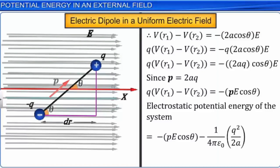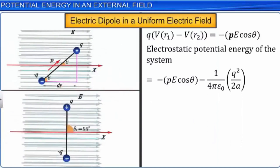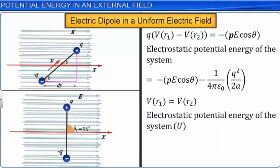If the electric dipole is perpendicular to the field direction, then V(r1) equals V(r2), so PE cos theta equals zero. The electrostatic potential energy of the system then equals minus (1/4πε₀)(Q²/2A).